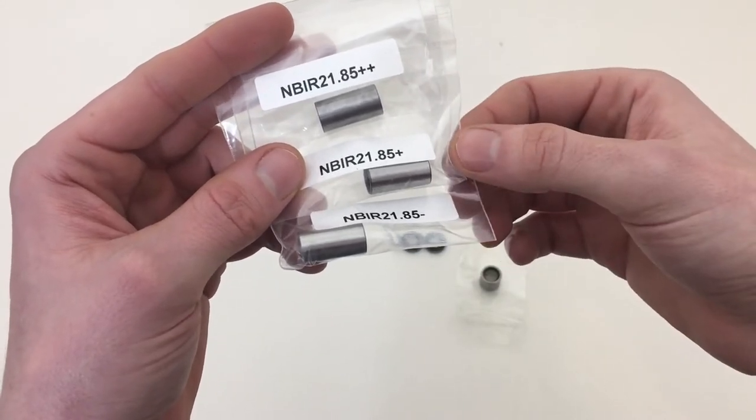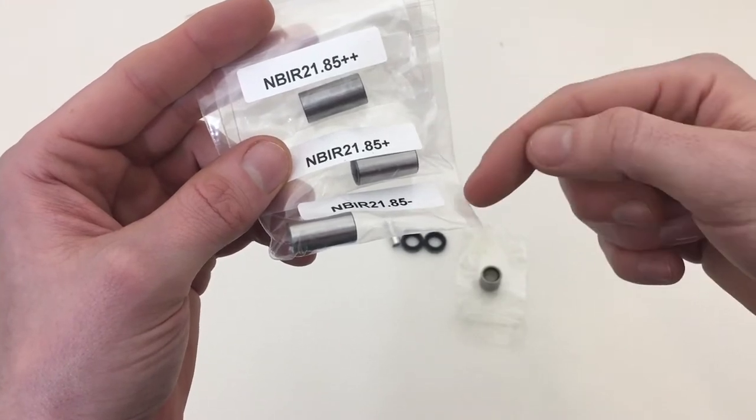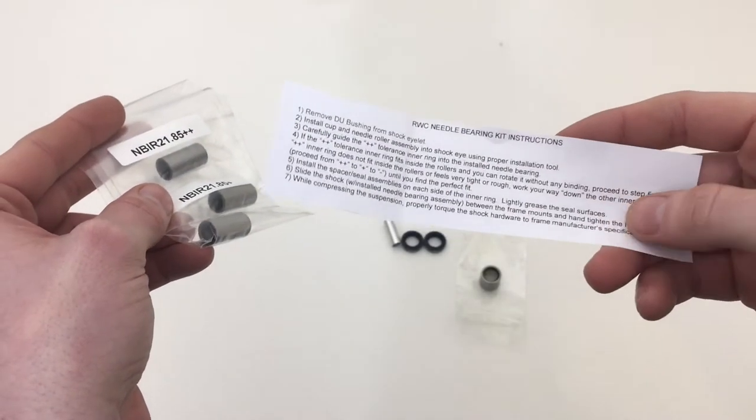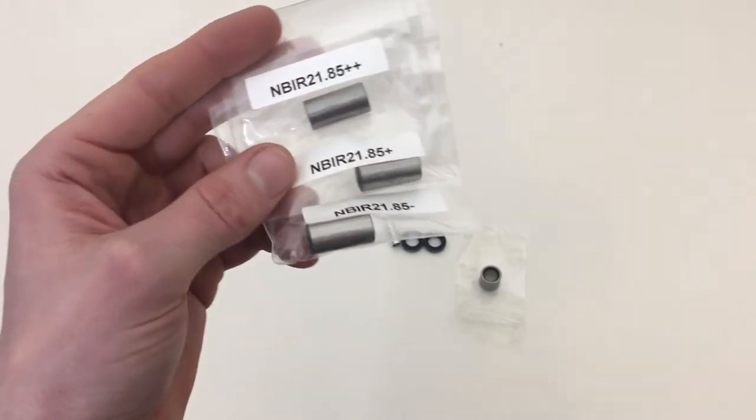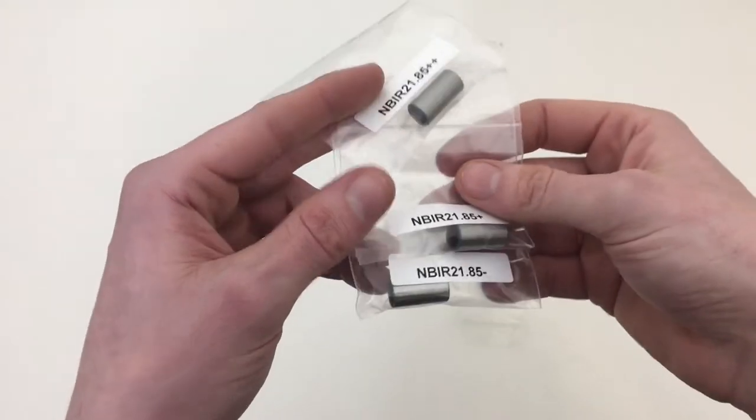If it does, you just drop down to the plus and then if that one is still binding a bit, you just drop down to the minus. It comes with these little instructions to tell you about it. But that's the reason you get three of them, so you end up with a really nice fit on the bearings.